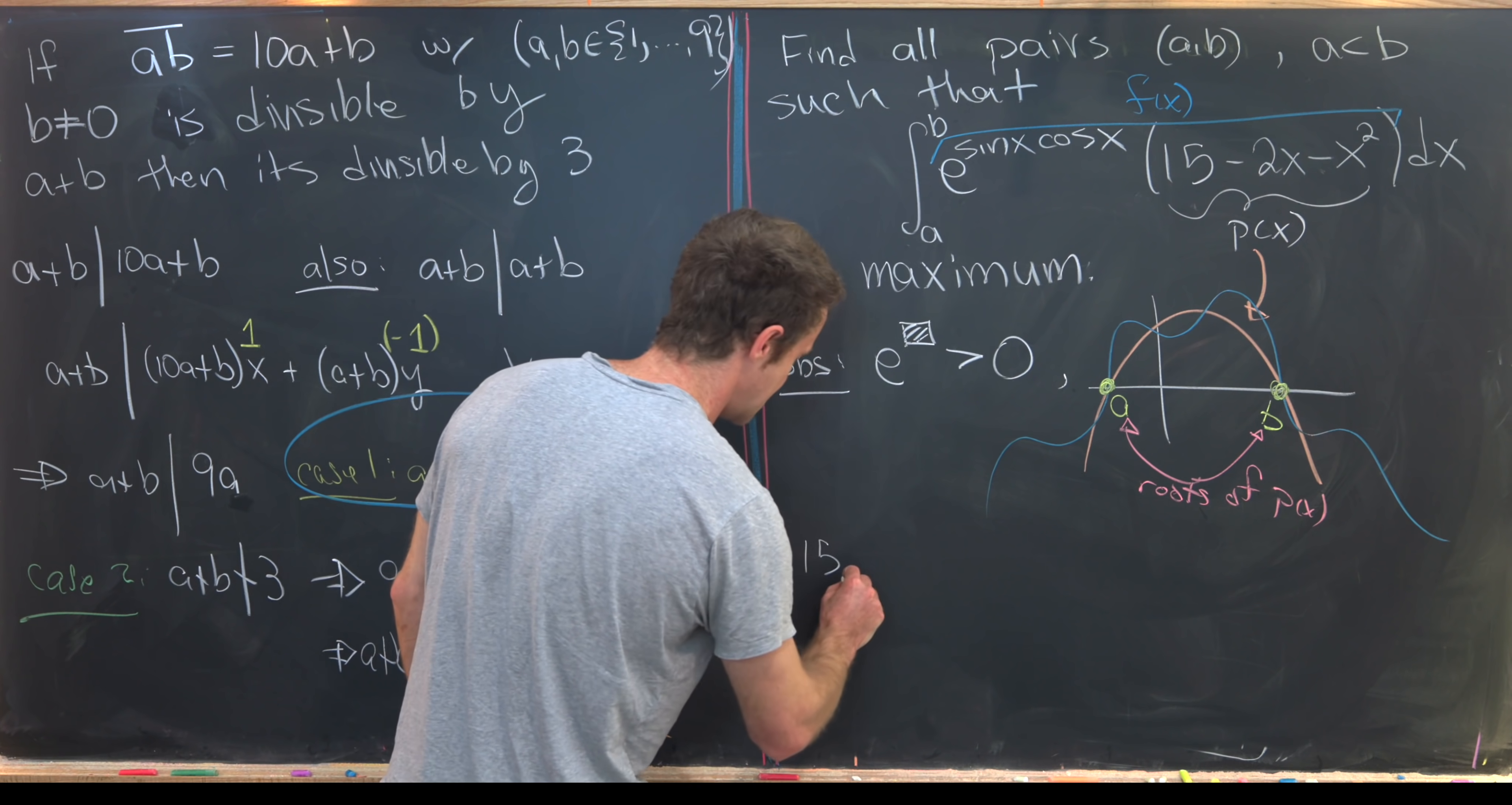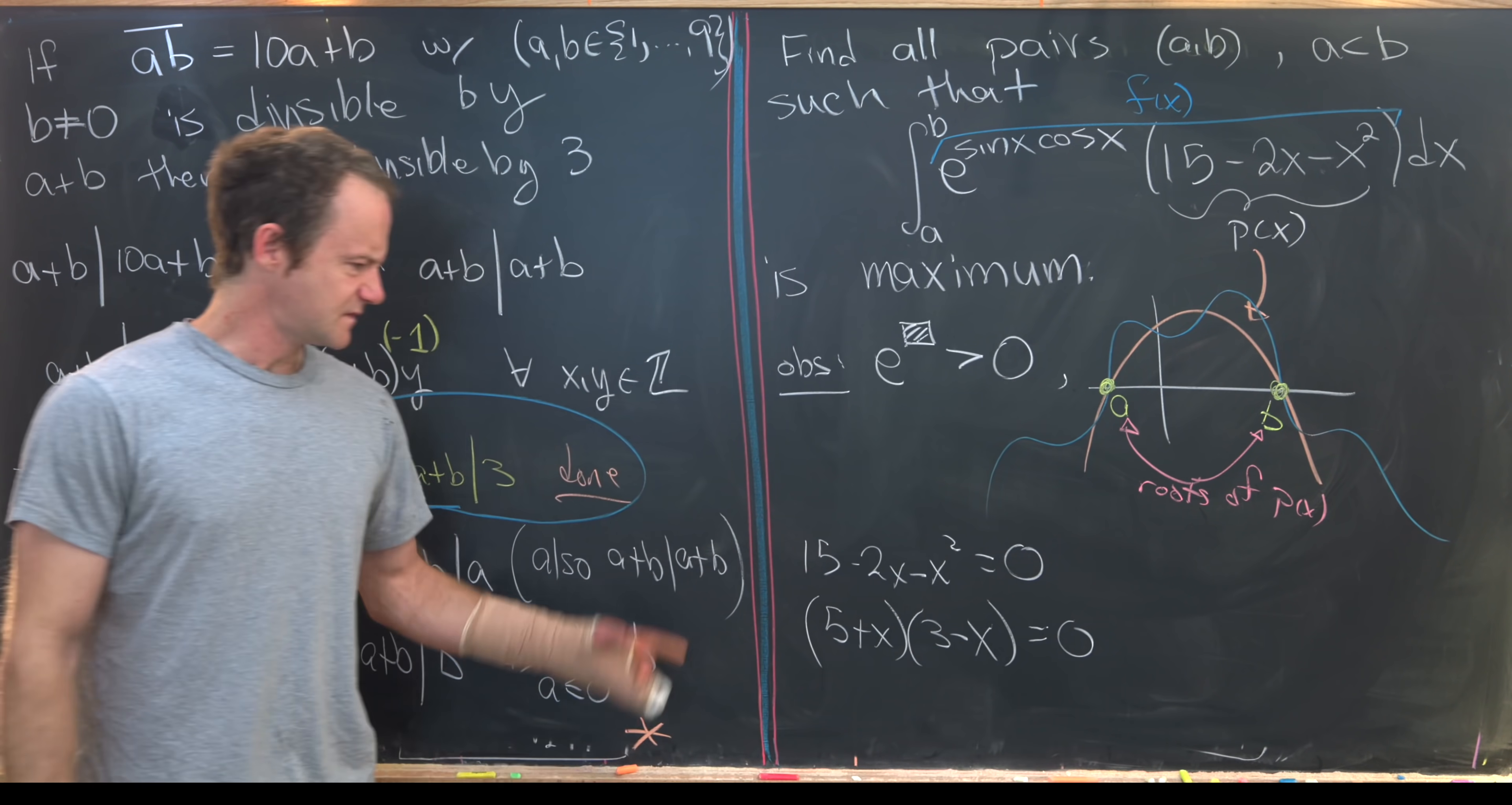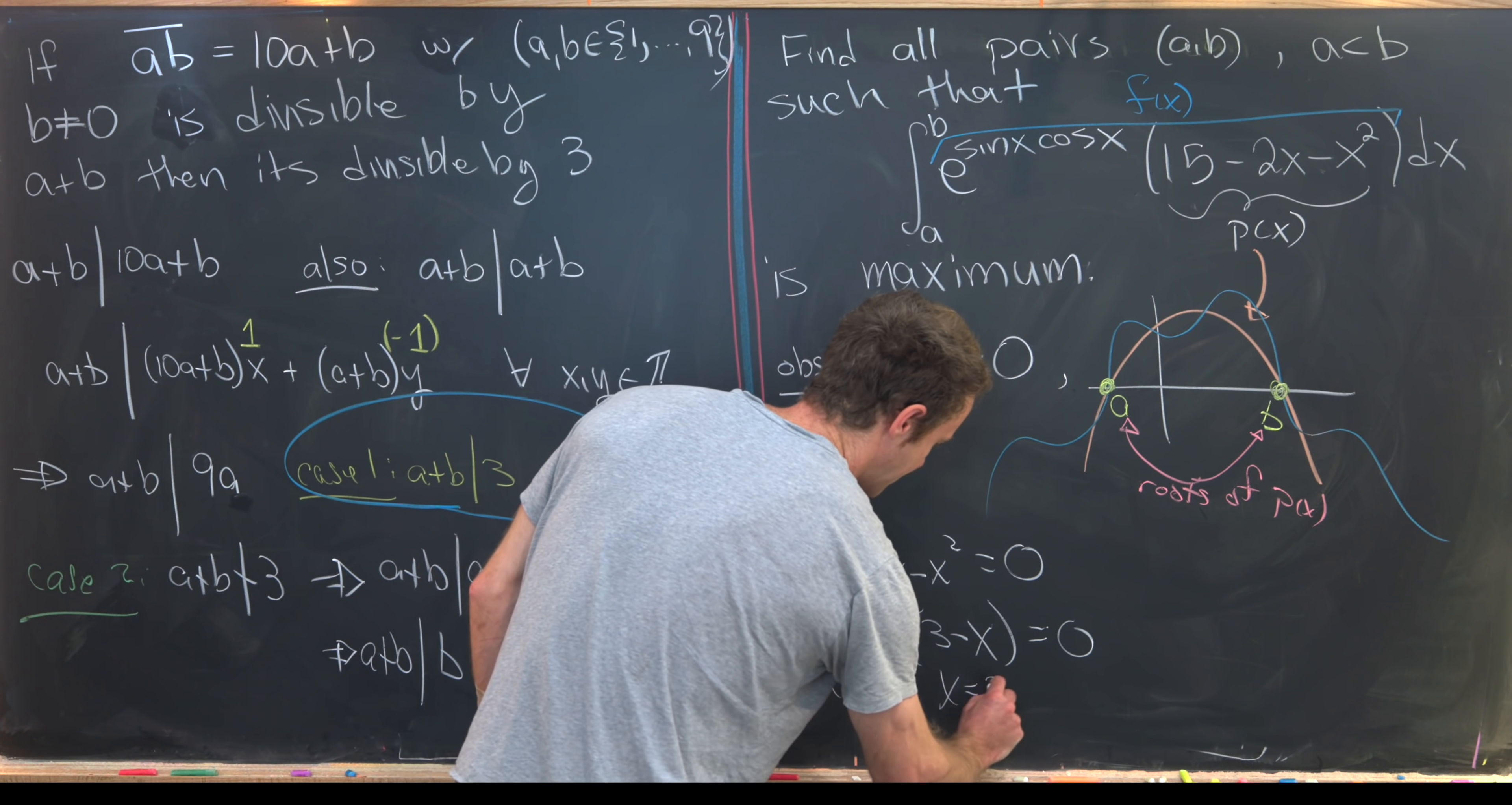So in summary, all we have to do is find the roots of our polynomial p of x and those will give us the end points of our integration. Okay, so let's do that. We're going to take 15 minus 2x minus x squared equals 0. Then we'll factor this. It's not too hard to factor this. It will factor as 5 plus x and then 3 minus x equals 0. Let's just maybe go ahead and check that that works. We have 5 times negative x, x times 3. That'll obviously combine to negative 2x. So we're good to go.